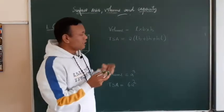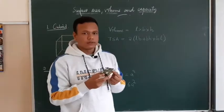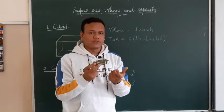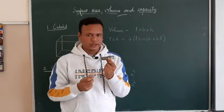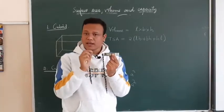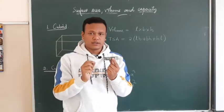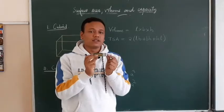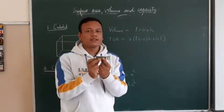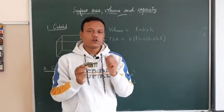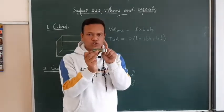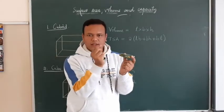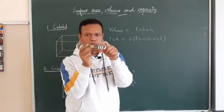Next is volume. Volume is the space occupied by a particular object. Please remember this happens only in three-dimensional objects, not in rectangles, squares, circles and all. So volume is the space occupied by any object. For example, this chalk box is occupying only this much of space — that is its volume.